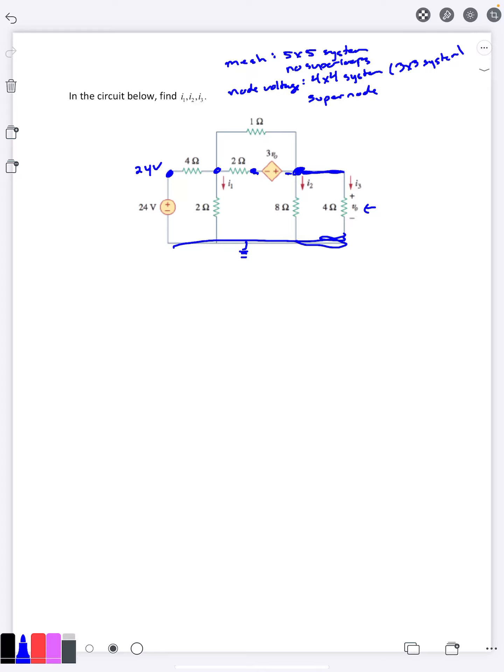Personally, I think especially noticing that this is a node voltage, I think the node voltage method giving a three by three system is best. So I'll go ahead and stick with that here.